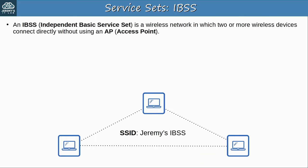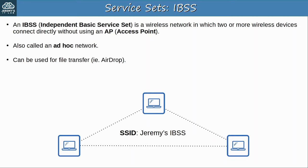First, an IBSS, Independent Basic Service Set, is a wireless network in which two or more wireless devices connect directly without using an AP, access point. These are also called ad hoc networks. They can be used, for example, for file transfer such as when using Apple's AirDrop. However, they are not scalable beyond a few devices and are typically only used for limited purposes such as quick file transfers.